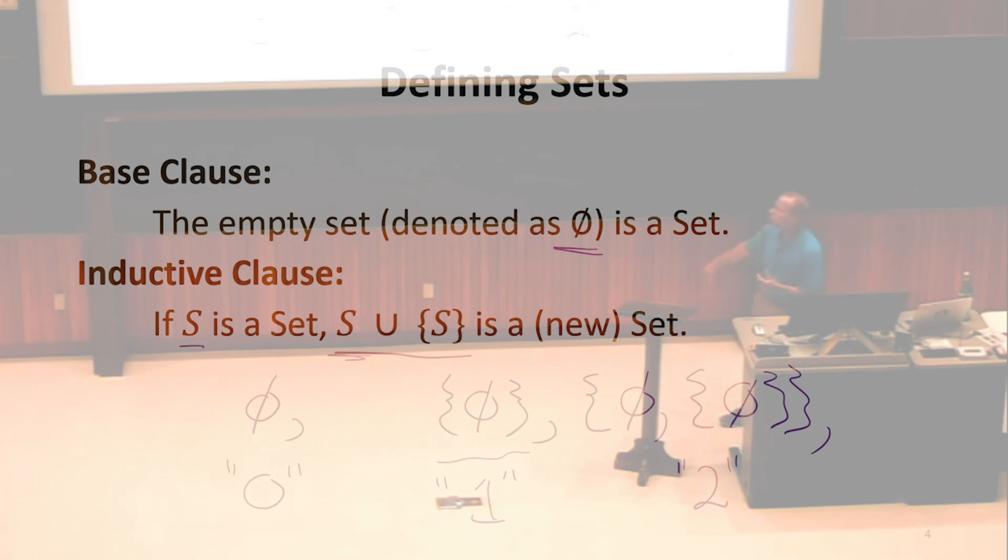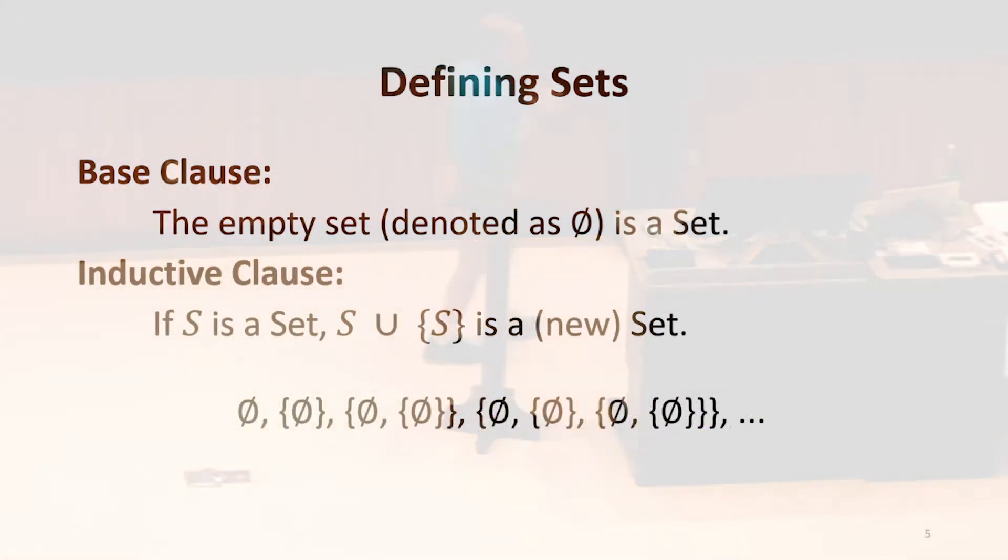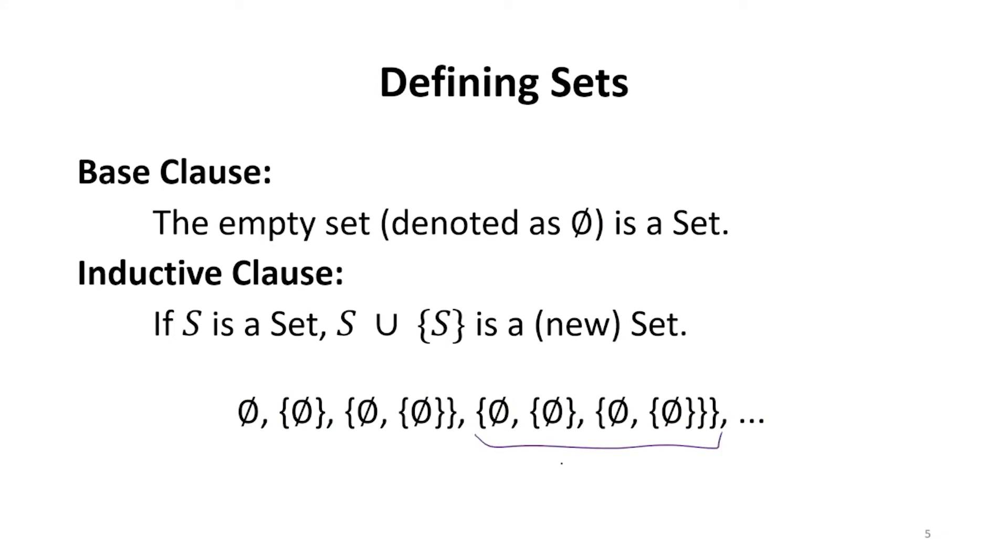This looks like another way of saying, well, let's get rid of that mysterious successor function, which we used the last class to define the natural numbers, and use something that seems more familiar that we already know. That's the union and set operations. And now we can define the equivalent of the natural numbers.